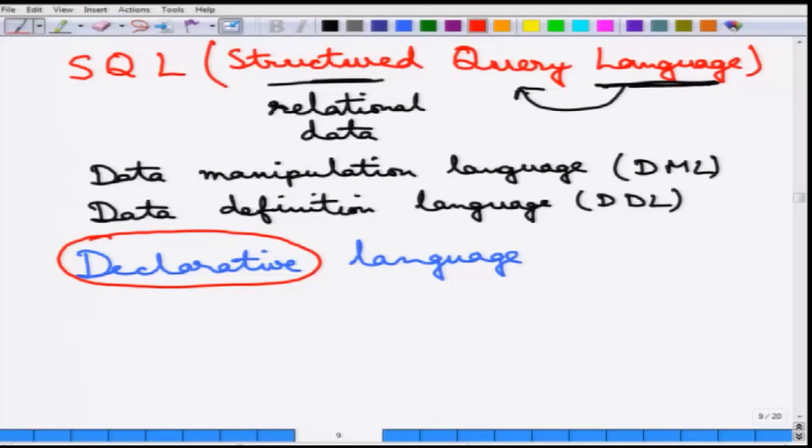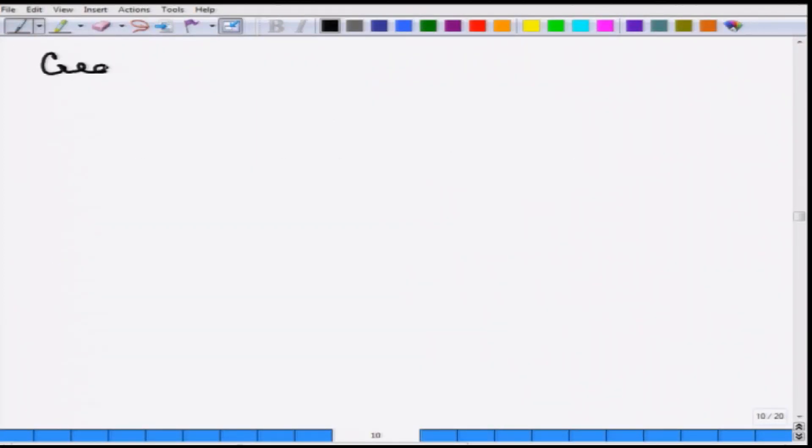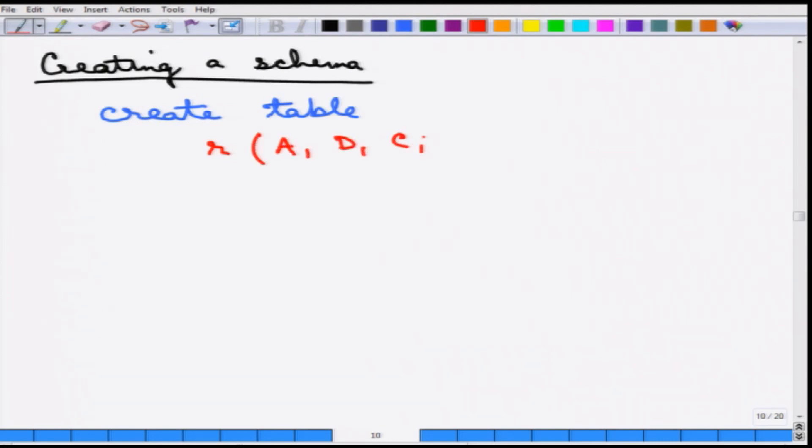So let us start off with some examples of SQL. The first thing is how to create a relational schema. The way to create is that there is a create table construct. You say create table, then specify the parameters in this manner: A1, D1, C1, then some An, Dn, Cn, then some constraints.